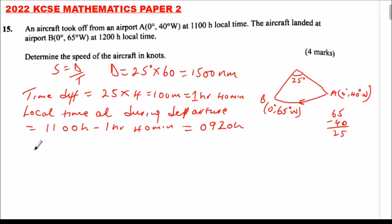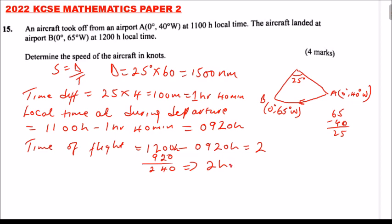We can get now the time of flight it took from A to B. Time of flight is equal to, since it arrived at 12 local time, you subtract the time it left from A, 12:00 hour minus 09:20. That will give you, this is 11 minus 9, that is 2. So it took 2 hours 40 minutes.